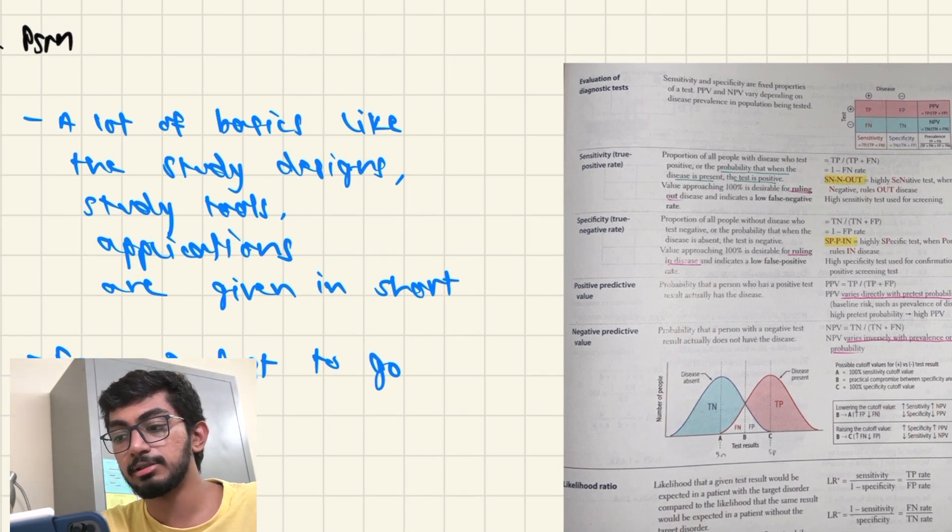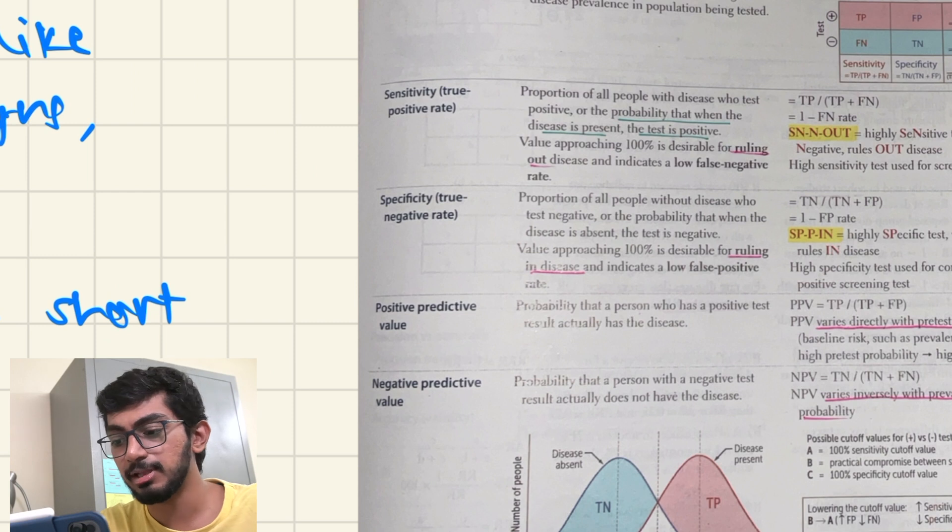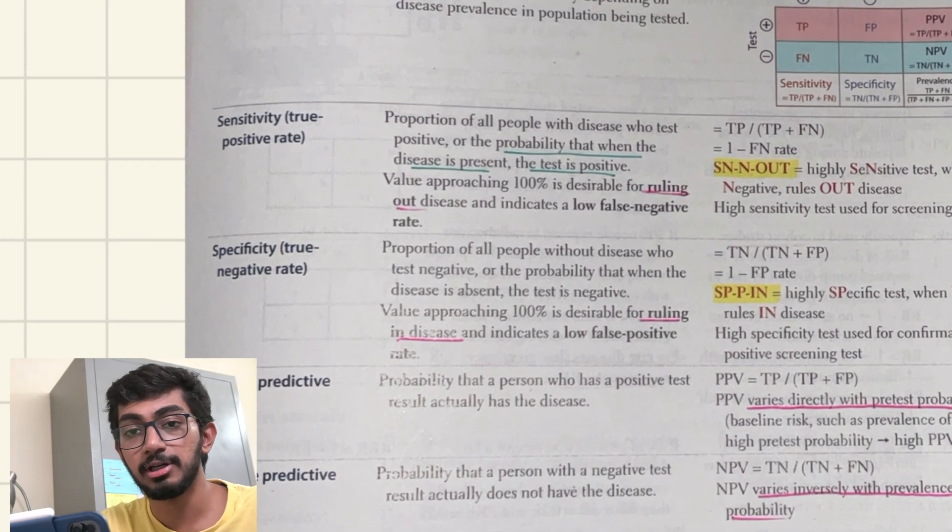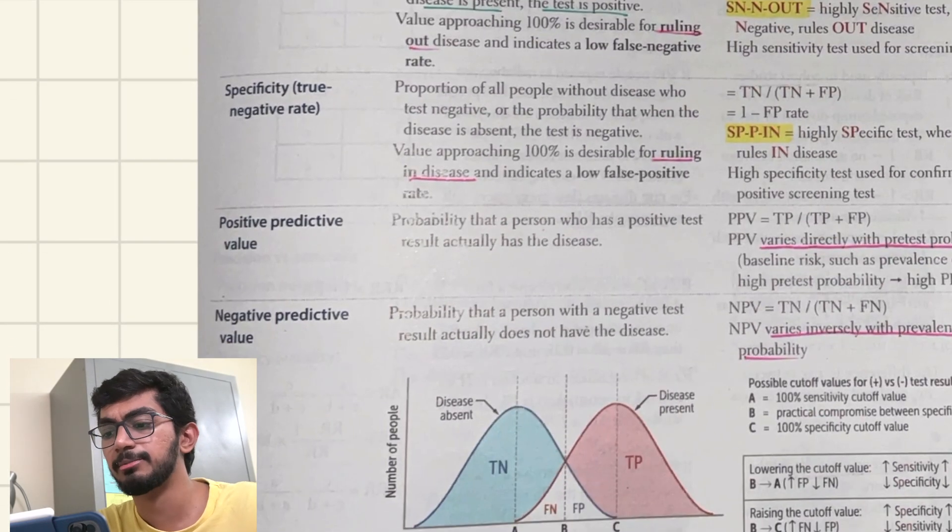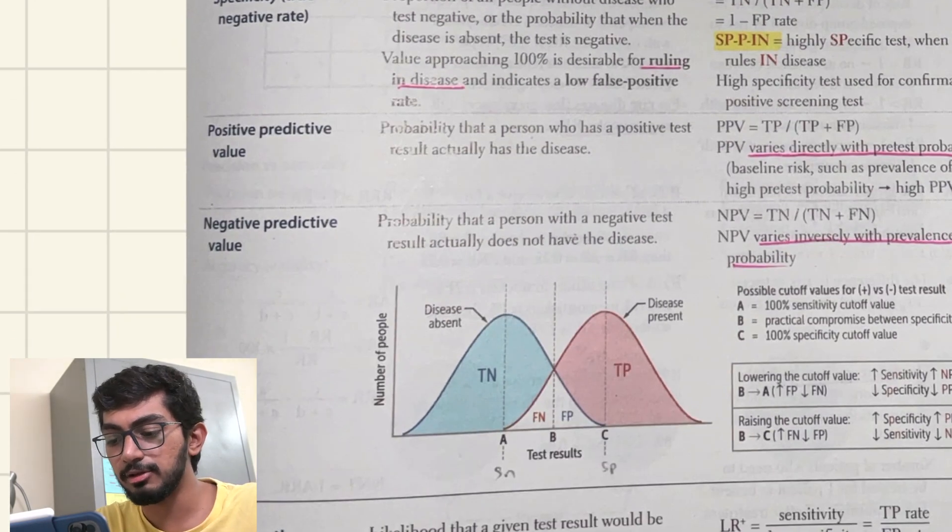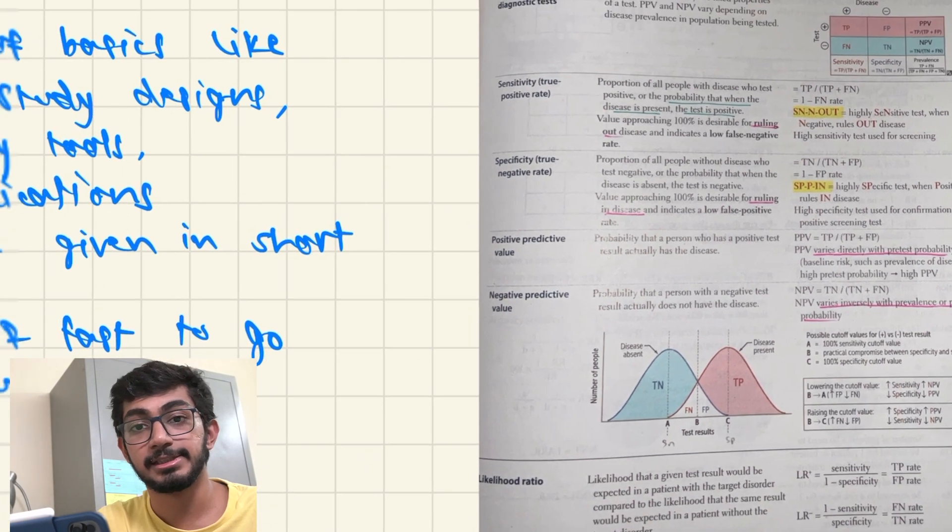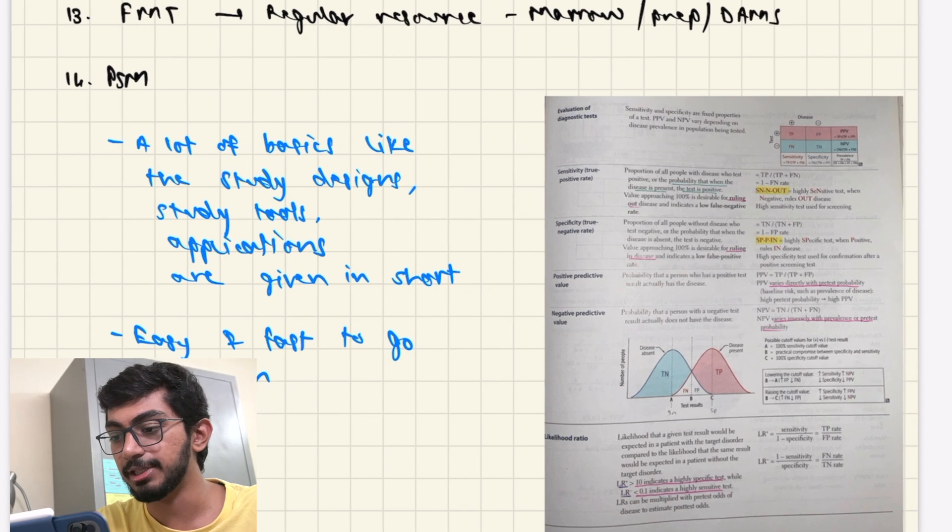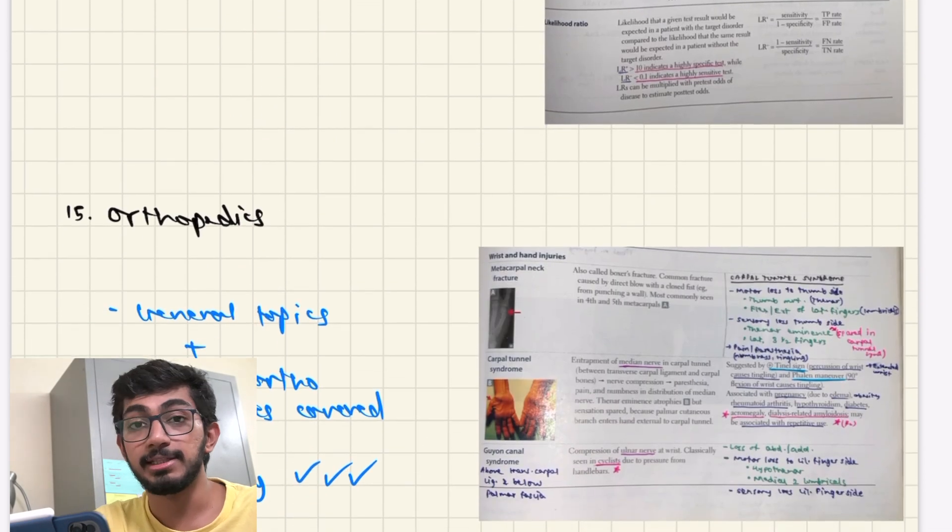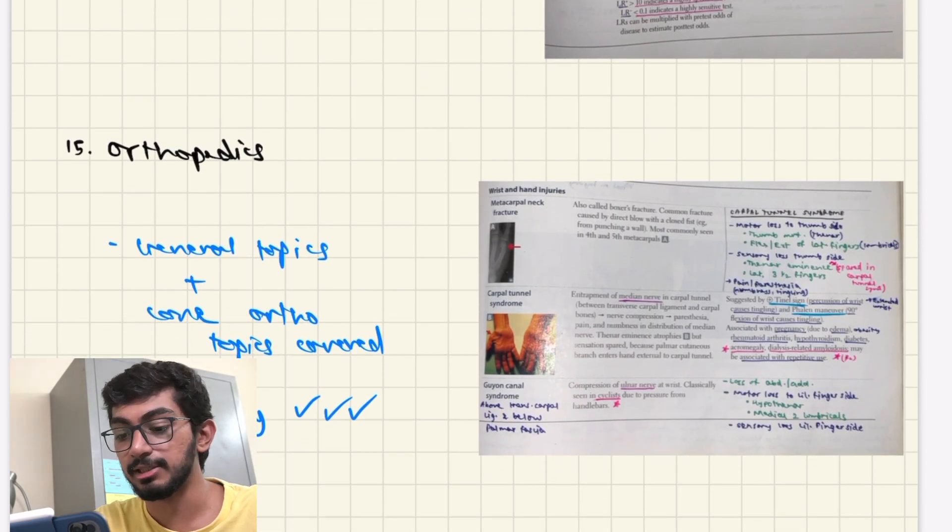And PSM is mentioned in the First Aid book. And a lot of basic things like the study design, study tools, applications, everything is given in short. And you can just highlight some of the important mnemonics for remembering everything. And they've also given some graphs with which you can identify the sensitivity, specificity and everything. It's easy and a fast way to revise PSM and you can apply these for the questions that they ask.